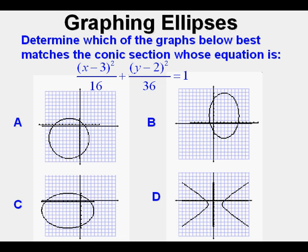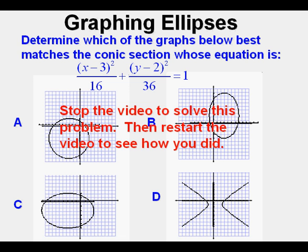Here's the next problem. Determine which of the graphs below best matches the conic section whose equation is (x - 3)²/16 + (y - 2)²/36 = 1. Stop the video and see if you can solve this one. Restart it to see how you did.